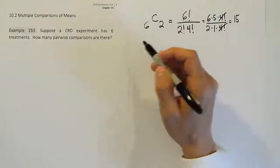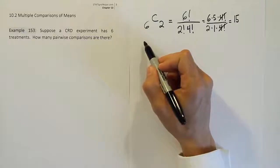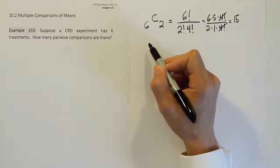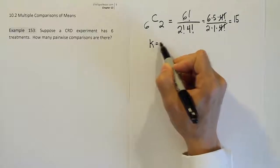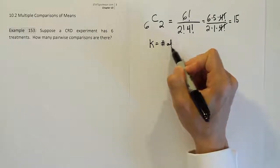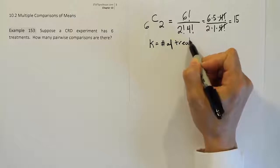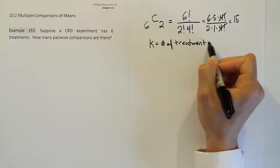So what we can do in general is just say let's change this into a formula and we're going to say that you can do this problem by just using the following results. If you take k to be the number of treatments that you have,